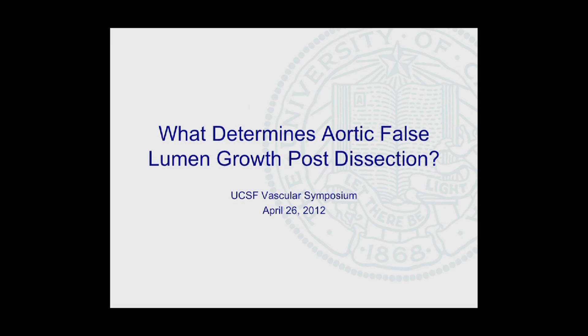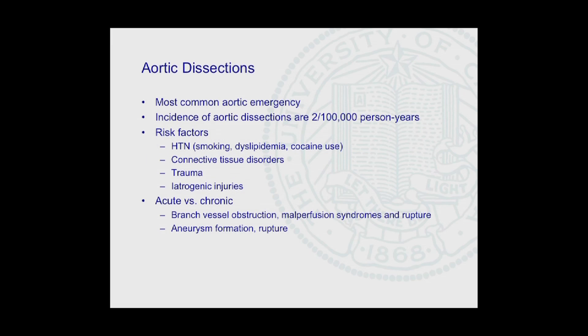Just to very briefly introduce the topic: aortic dissections, as I'm sure everybody in the room is familiar with, is the most common aortic emergency — approximately two events per every 100,000 person-years in the United States. We know all the usual risk factors: hypertension, the atherosclerotic risk factors, smoking, hyperlipidemia, and connective tissue disorders make up the majority of the patients that we see.